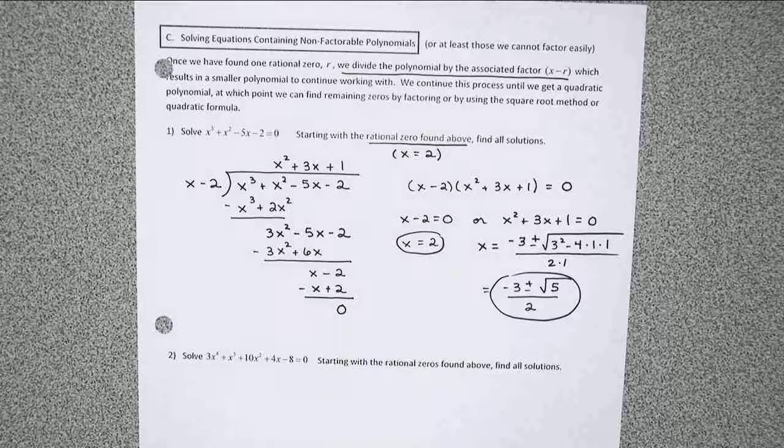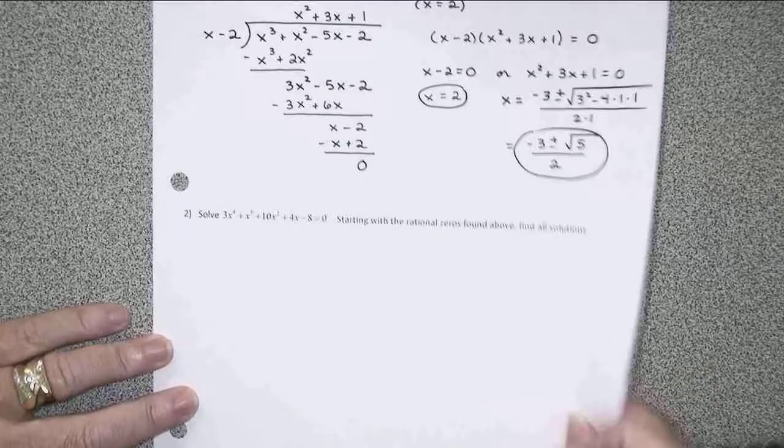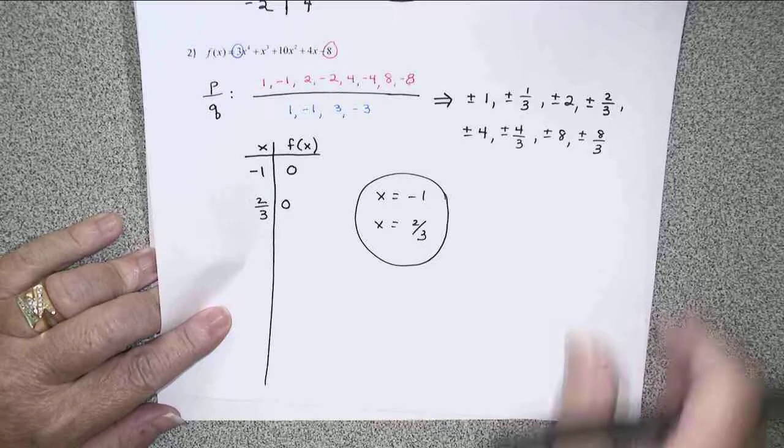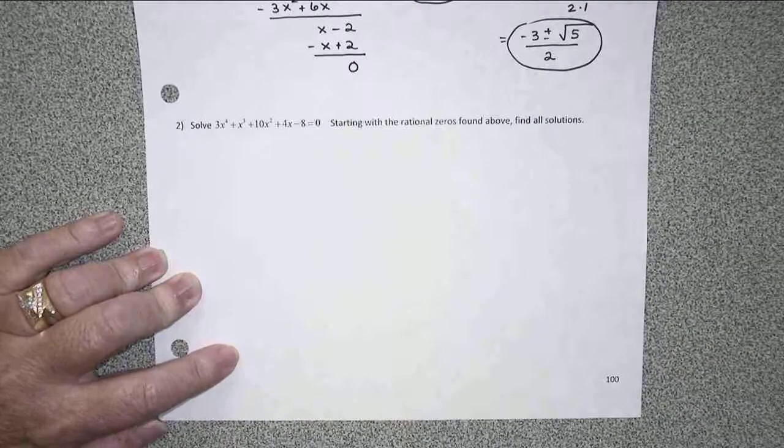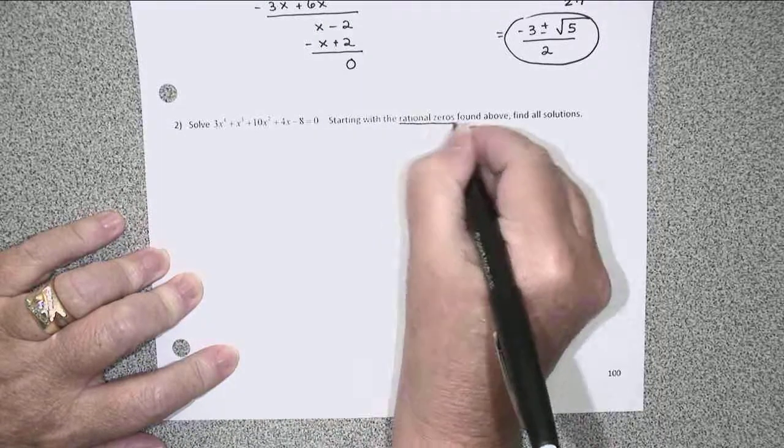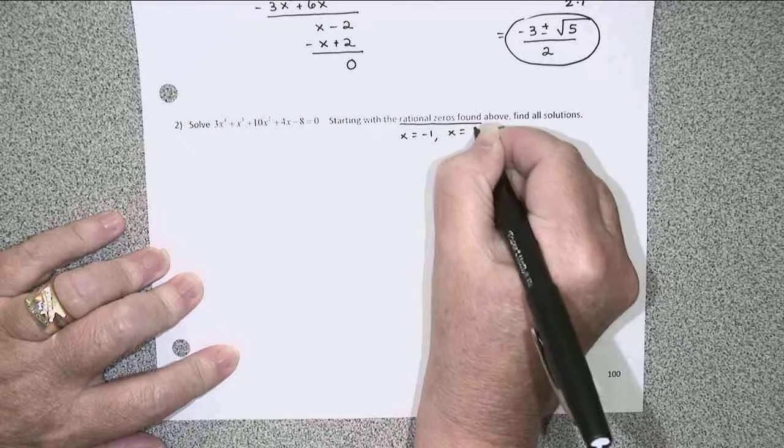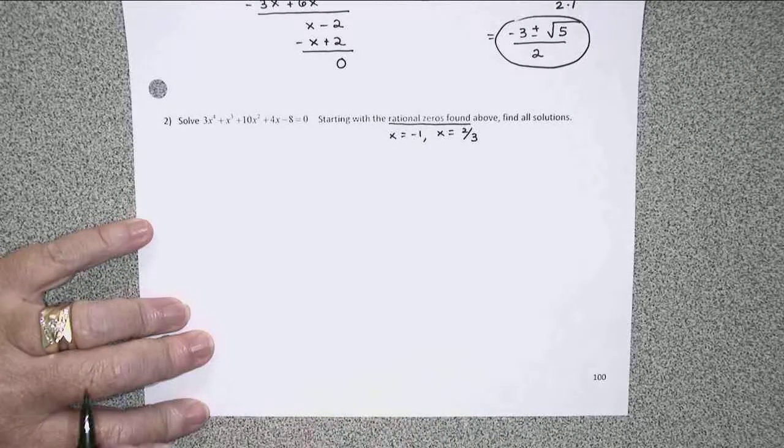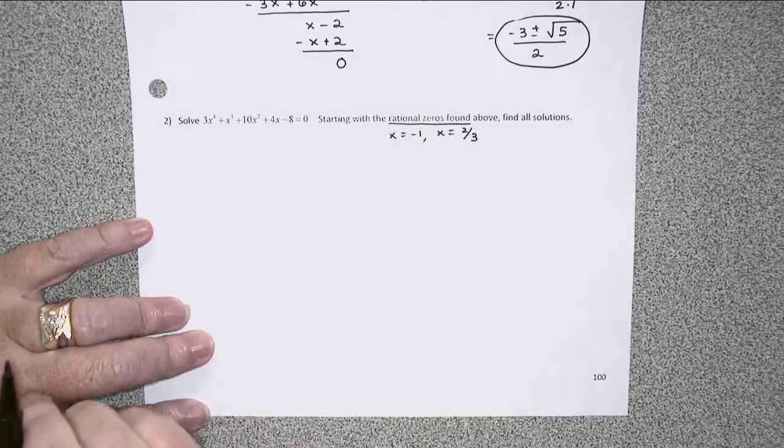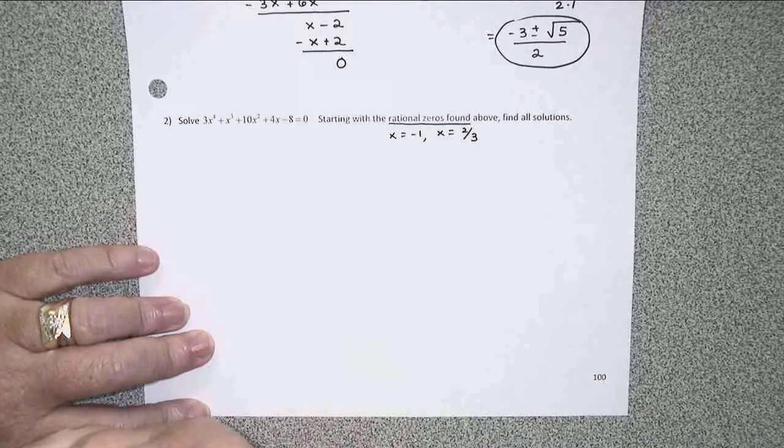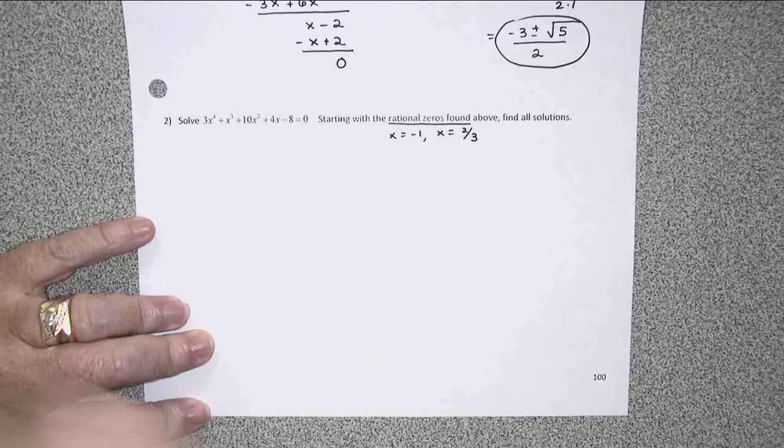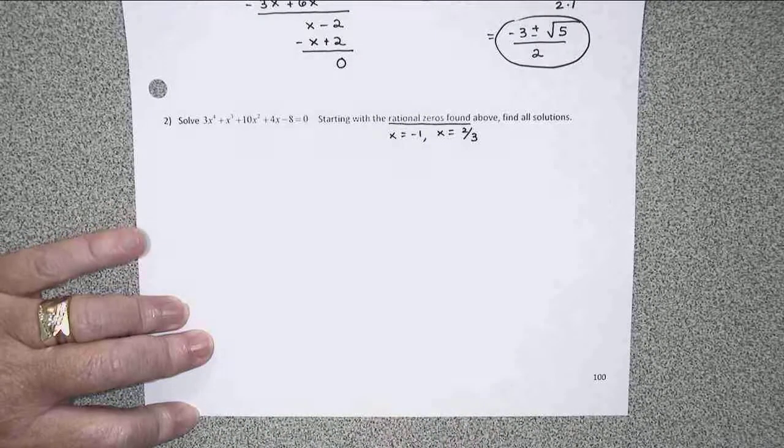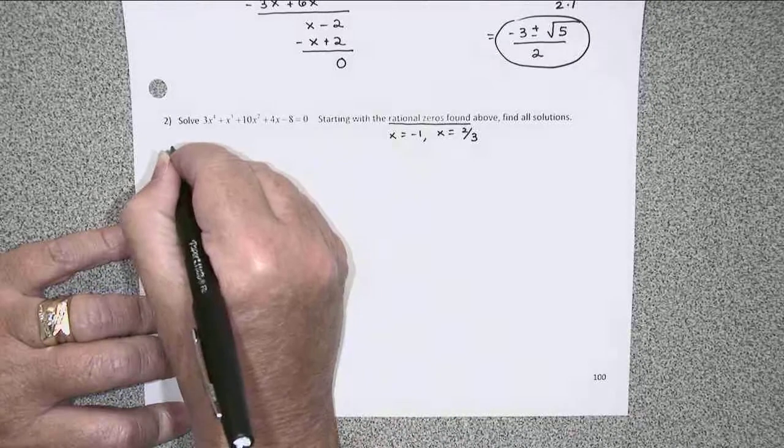Let's try it again with the other one that we've already analyzed for rational zeros, the fourth degree polynomial. This one had x equals negative 1 and x equals 2 thirds that we already knew were rational zeros. We're going to go ahead and divide each one of those one at a time into our original polynomial to see if we can once again reduce the degree until we can get perhaps hopefully a quadratic. Because once we have a quadratic, we always can solve. I'm going to start with the negative 1. And this one's a bit larger of a polynomial, so I'm going to go ahead and use my synthetic division this time.